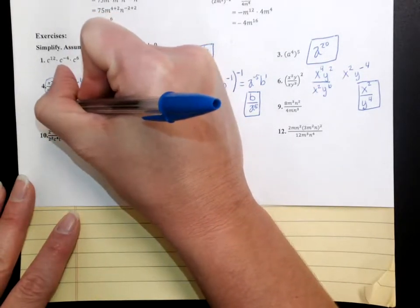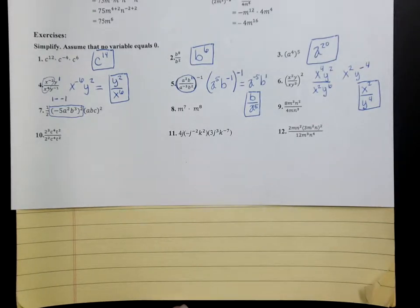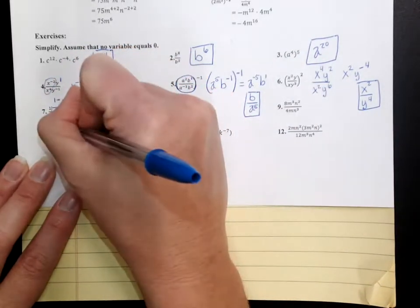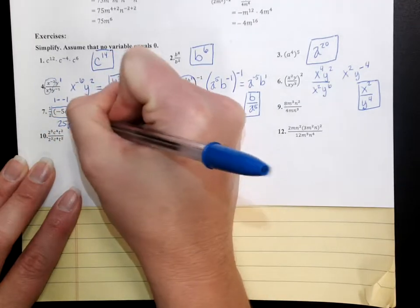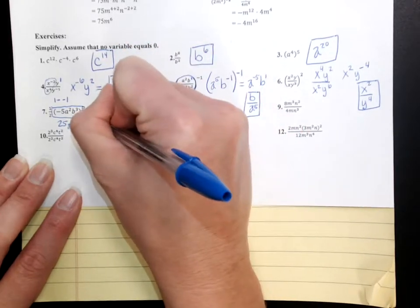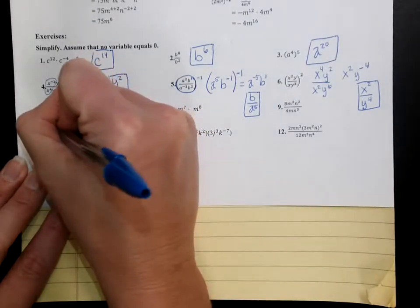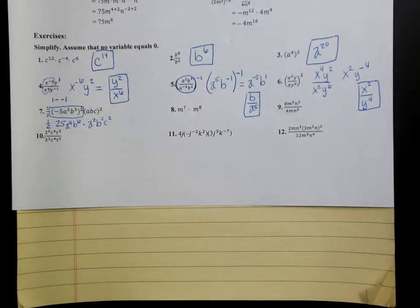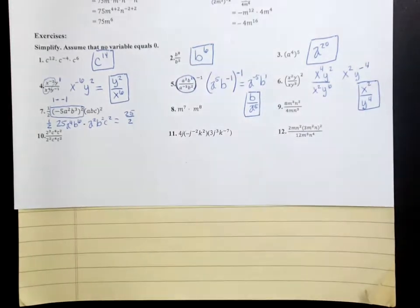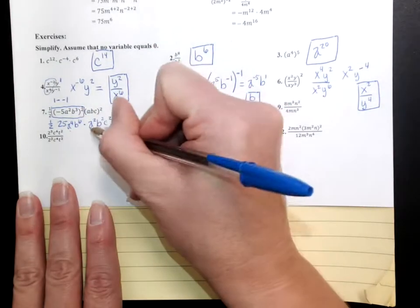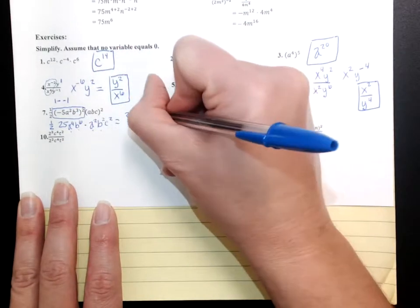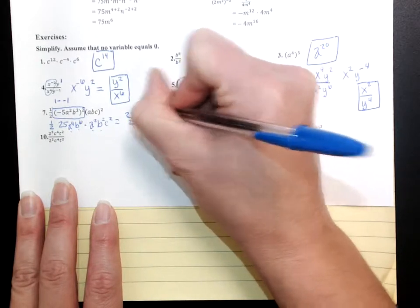So the first thing I'm going to do is square that. Negative 5 squared — don't forget you're squaring a negative 5 — that's a positive 25. a squared squared is a to the 4th. b to the 3rd squared is b to the 6th. When you square a, b, c, you get a squared, b squared, c squared. Don't forget you have the 1 half here in front. So 1 half of 25 — I'm going to leave that as 25 over 2. When I combine my a's: a to the 4th times a squared is a to the 6th because I add exponents. b to the 6th times b squared is b to the 8th. c squared stays. And this is your answer.